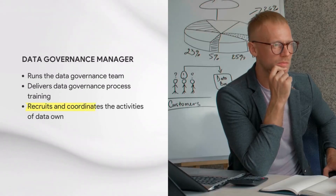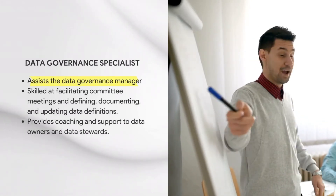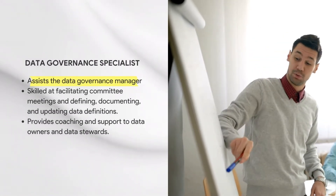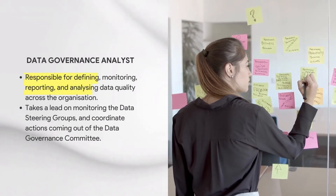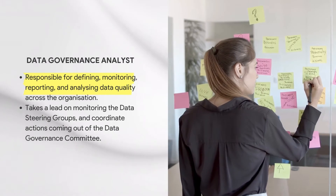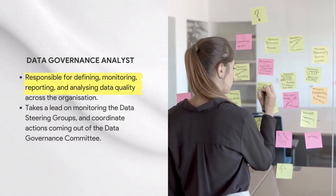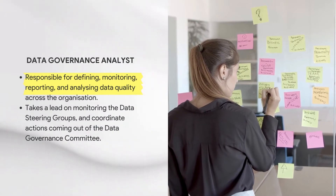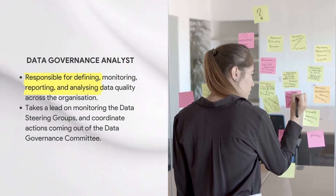Some of the roles you will find within the data governance space are: the data governance manager, who basically runs the data governance team; the data governance lead or specialist, who assists the data governance manager; and at a more entry level, the data governance analyst or consultant — sometimes also called a data quality analyst — who is responsible for defining, monitoring, reporting, and analyzing data quality across the whole organization.